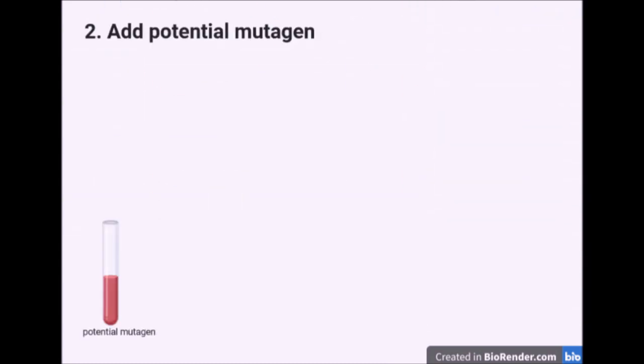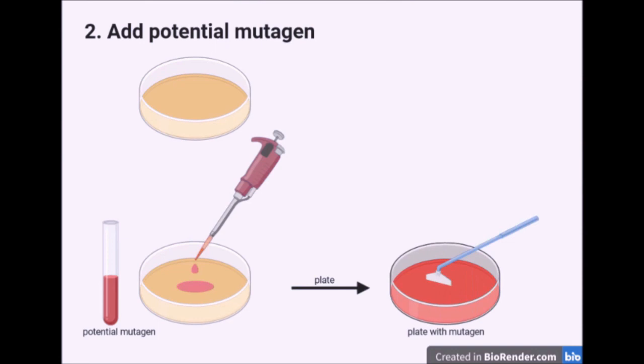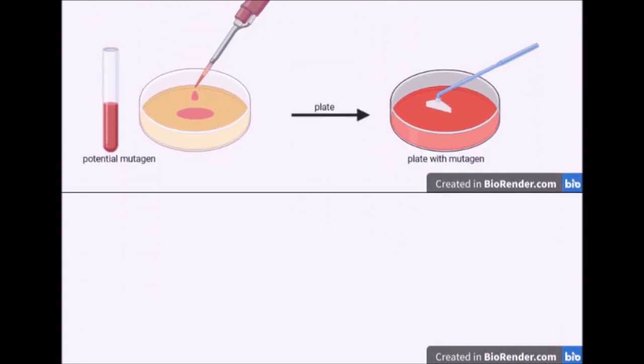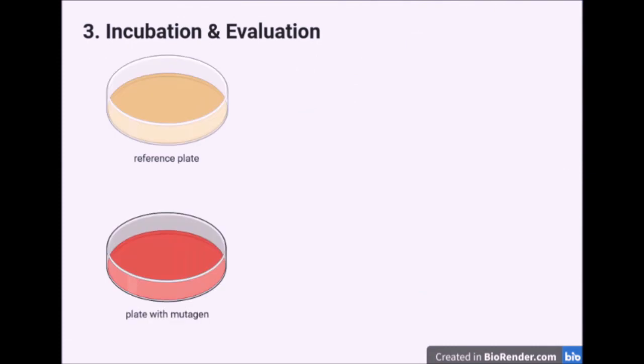In the second step, the potential mutagen is added to one of the agar plates and distributed evenly. For a clearer presentation, the agar plate with the added mutagen is shown in red. The other agar plate serves as a reference agar plate.